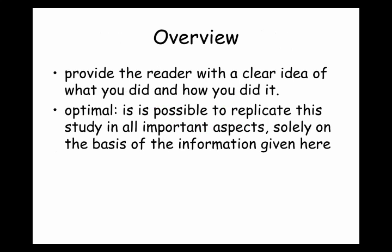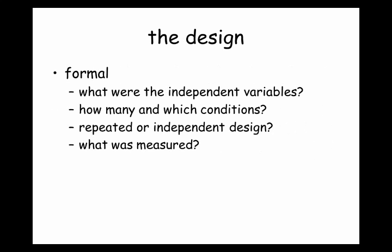The methods — that's what I said we should write first; that's straightforward. You need to provide the reader with a clear idea of what you did and how you did it. In an optimal case, you should be able to repeat the experiment only on the information given there — that's the gold standard. You need to weigh up what the important bits are and what's not so important. What do you have to report formally? The design — what were the independent and dependent variables? How many conditions? Repeated or independent design? What was measured — that's the dependent variable.